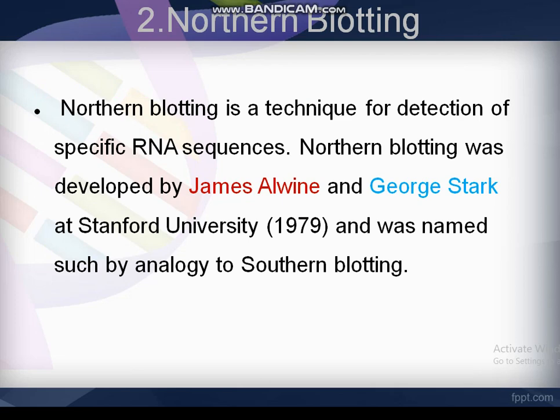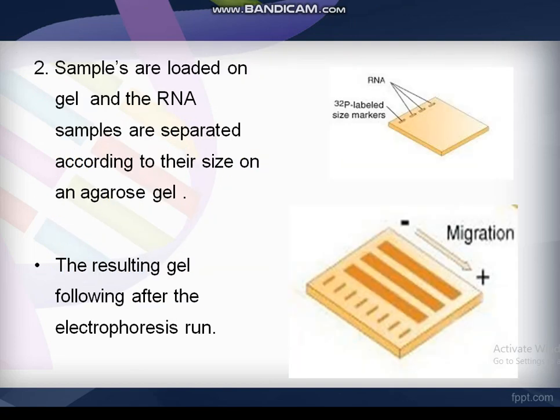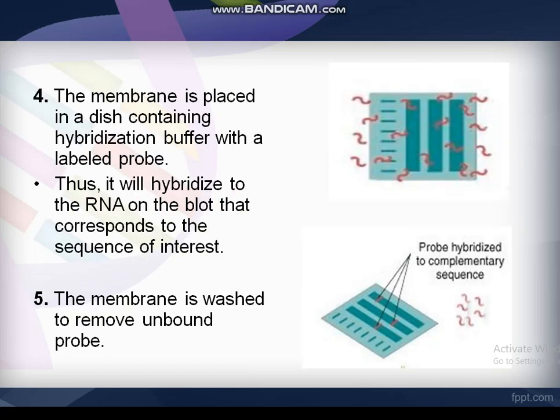Northern blotting technique is used for the detection of specific RNA sequences. Various steps are involved: firstly, RNA is isolated from several biological samples; then samples are loaded on a gel and the RNA samples are separated according to their size. The resulting gel following the electrophoresis run is then blotted on a nylon membrane or nitrocellulose fiber paper by creating a sandwich arrangement.